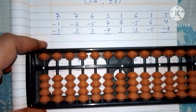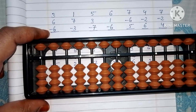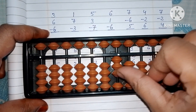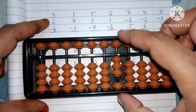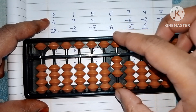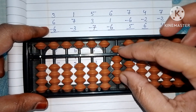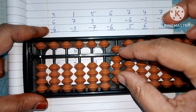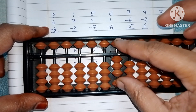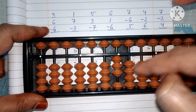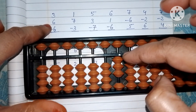Set to 0. Next question: 3 plus 6 minus 6. Add 3 with your thumb finger. Add 6 as 5 plus 1. Now subtract 6 — you can remove the upper bead and 1 lower bead, or subtract 6 from the beads shown. The answer is 3.